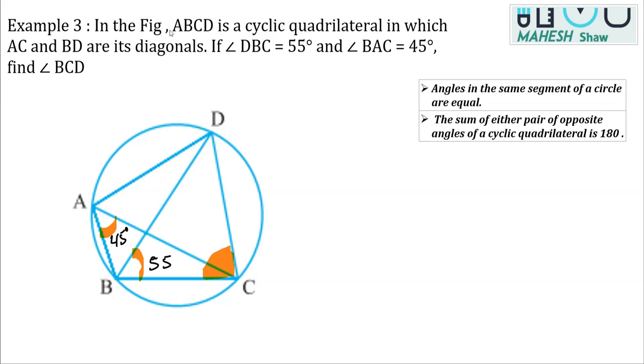Now, what you can see here is that this is a cyclic quadrilateral and the sum of opposite angles of a cyclic quadrilateral is supplementary. That means this angle that is DAB and DCB, sum of either pair of opposite angles of a cyclic quadrilateral is 180. So we are going to use this property.